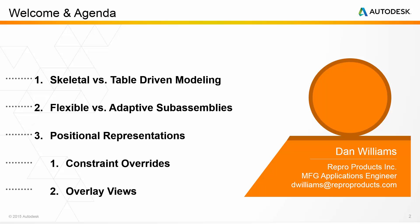We just discussed how the flexible and adaptive properties of subassemblies allow us to have Inventor evaluate the degrees of freedom of subassemblies within the context of a larger assembly. But neither one of those solutions really gives us the ability to define index positions for those subassemblies. There are certain important milestone index positions that indicate range of motion, and positional representations are a good solution for that.